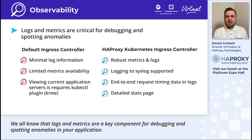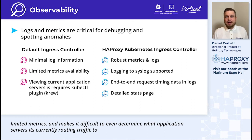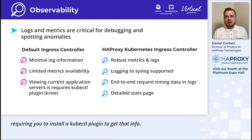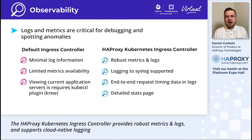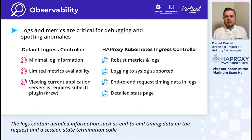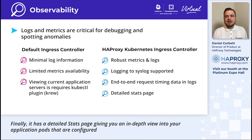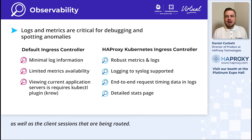Logs and metrics are a key component for debugging and spotting anomalies in your application. Unfortunately, the default ingress controller provides a minimal amount of observability data — sparse log information, limited metrics — and it's even difficult to determine what application servers it's currently routing traffic to, requiring you to install a kubectl plugin to get that info. The HAProxy Kubernetes ingress controller provides robust metrics and logs, supports cloud-native logging by outputting logs to STDOUT, and also supports routing them to a syslog server. The logs contain detailed information such as end-to-end timing data on the request and a session state termination code, allowing you to quickly determine whether a connection was completed successfully. It also has a detailed stats page giving you an in-depth view into your application pods and the client sessions being routed.